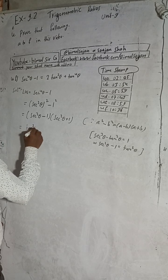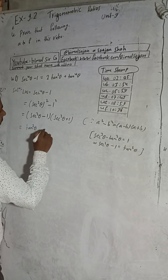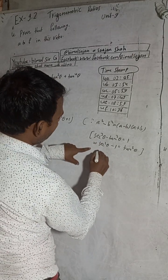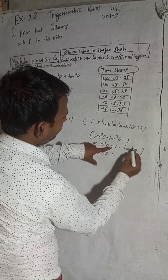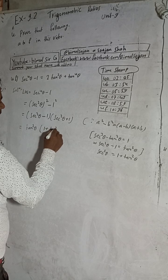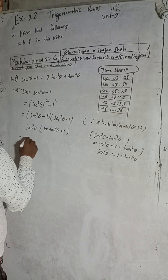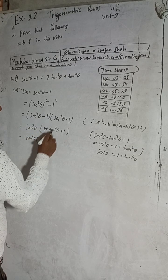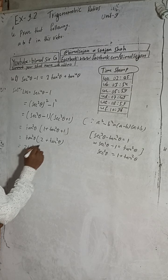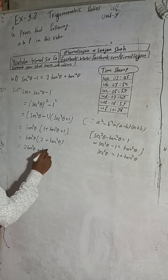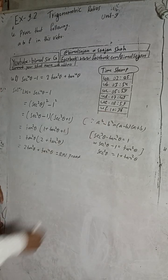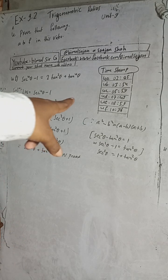And sec²θ + 1: since sec²θ = 1 + tan²θ, we get (1 + tan²θ) + 1 = 2 + tan²θ. Multiplying: tan²θ × (2 + tan²θ) = 2tan²θ + tan⁴θ, which equals the RHS. This is the solution of 4f, the last question. The timestamp is 10 minutes 36 seconds.